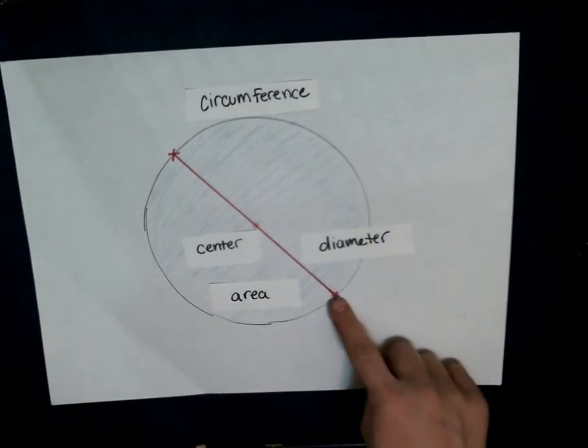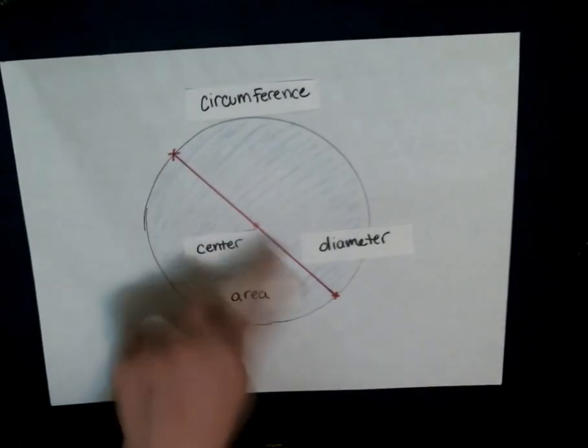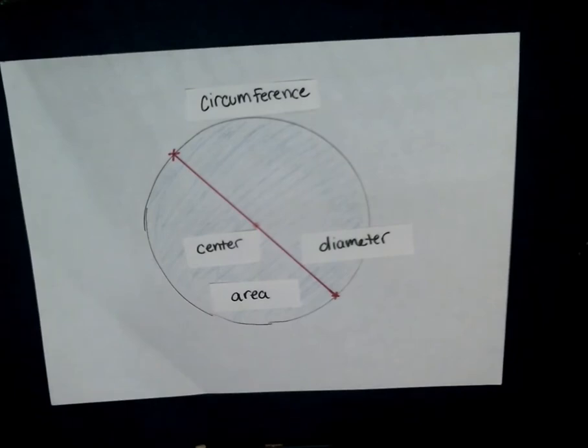A diameter is a line that goes through the center of the circle and touches two points on the circumference. It has to go through the center. That's real important.